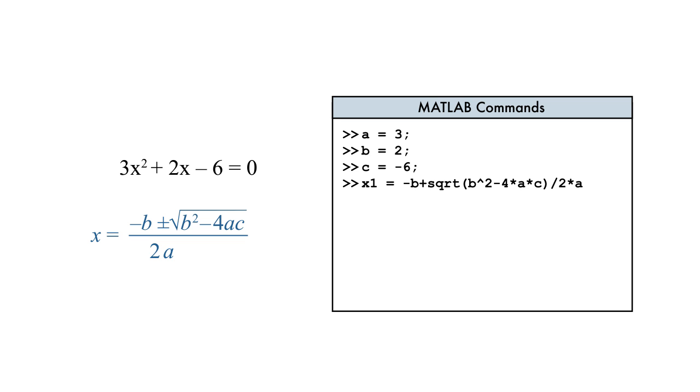Next, we enter the formula for the first root. While this expression may appear correct at first, it doesn't produce the intended result. Because MATLAB calculations follow the order of operations, we actually enter this expression. So, minus b is no longer part of the fraction and a is not in the denominator.